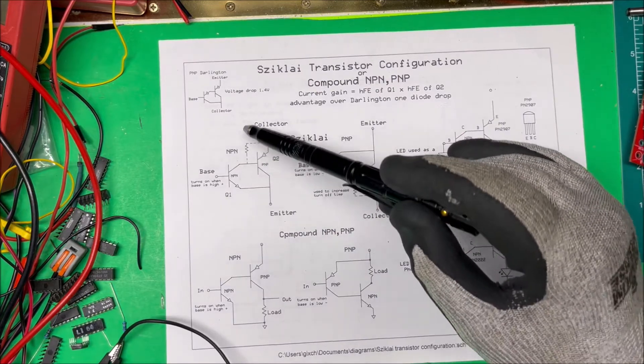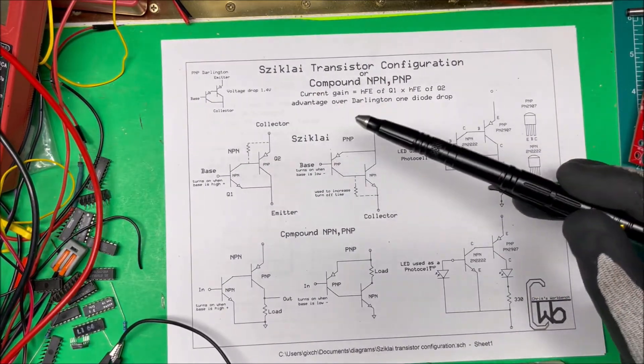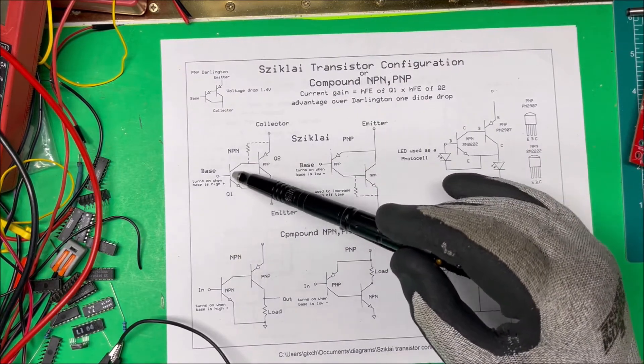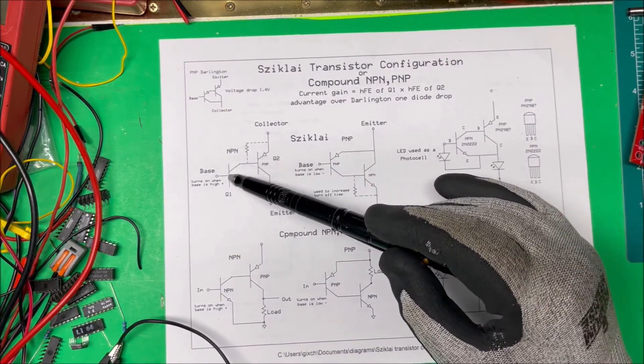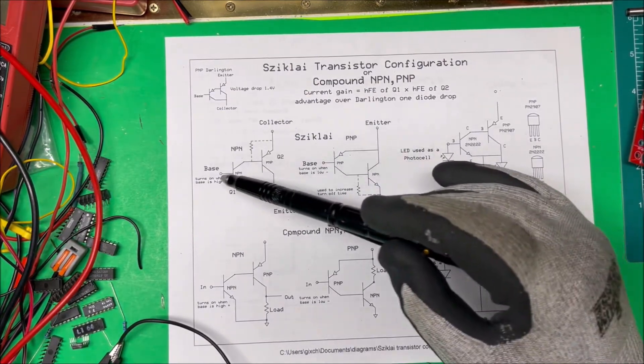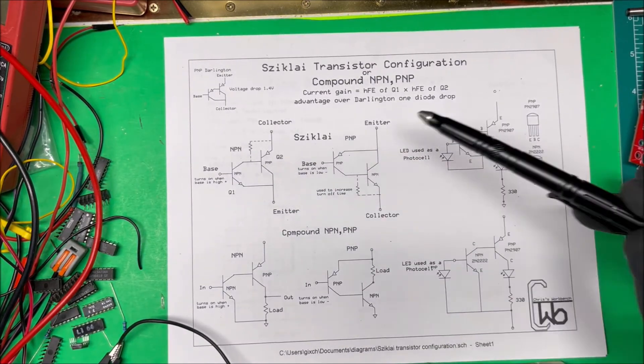The advantage of this is that the Darlington has two diode drops to deal with, so it's 1.2 or 1.4 volt drop. In this case we only have one diode drop, so it's only 0.6 or 0.7 volts. The base can be a lot lower and you can have a lot less current.